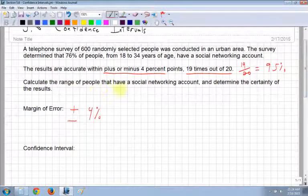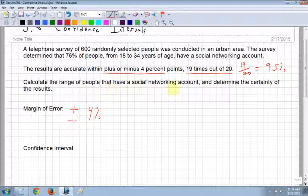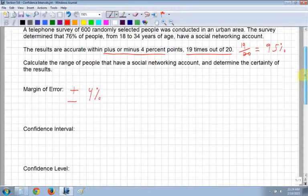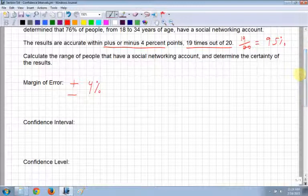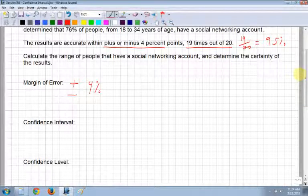So it says, calculate the range of people that have a social networking account and determine the certainty of the results. So your questions out of the textbook will be much more concrete. They'll be very specific. So there's our margin of error. Now, what's the confidence interval?